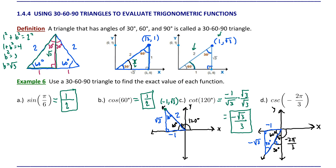Now that our diagram is set up, we need to evaluate cosecant. Remember cosecant is defined as r divided by y. So r equals 2, y equals negative square root of 3. The point on the terminal side is x equals negative 1, y equals negative square root of 3. So r divided by y gives us 2 divided by negative square root of 3. Rationalizing the denominator, we end up with negative 2 square root of 3 over 3. The negative can be placed in the numerator, next to the fraction bar, or the denominator — the simplest way is in the numerator.